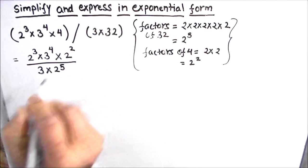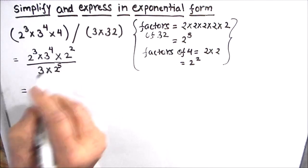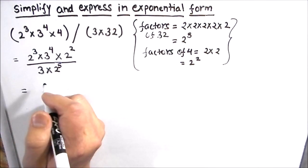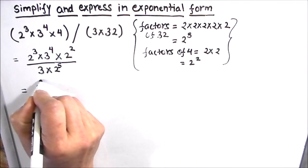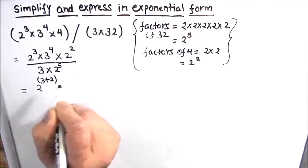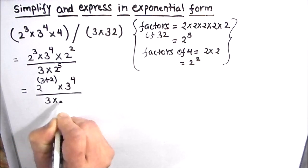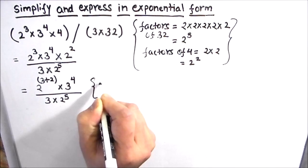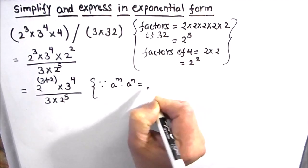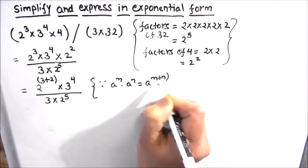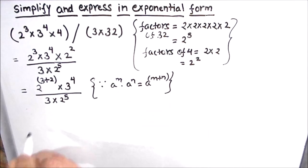The next step: we have 2 raised to power 3 and 2 raised to power 2, and we see that 2 cubed and 2 squared are getting multiplied. When the bases are the same and the numbers are multiplied, their powers get added. So this gives 2 raised to power 3 plus 2, times 3 raised to power 4, divided by 3 times 2 raised to power 5. The exponential law used here is: a raised to power m times a raised to power n equals a raised to power m plus n.